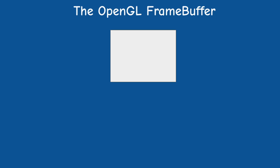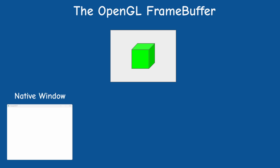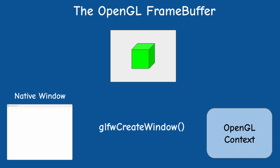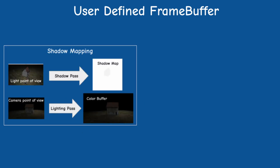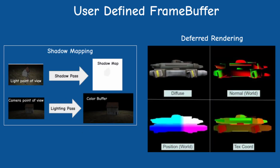In the OpenGL world we are familiar with the concept of the framebuffer, which is where the rendering results go. It is created together with a window in the OpenGL context when we call glfw create window. This specific framebuffer is called the default framebuffer, but we can also create user-defined framebuffers for off-screen rendering in techniques such as shadow mapping, deferred rendering and others.